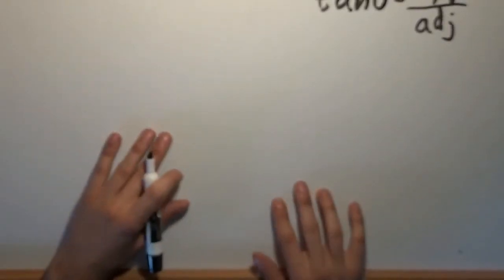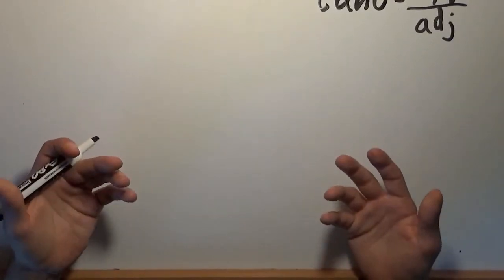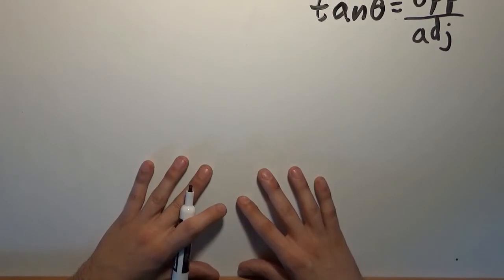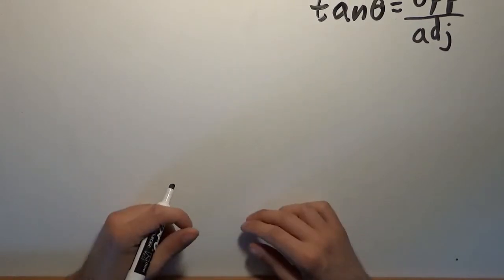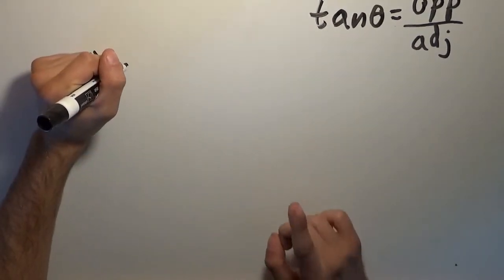So we have sine, cosine, and tangent, and they are written in terms of fractions of sides, right? Why don't we define functions that are the reciprocals of those functions? So I'm going to start with the reciprocal of the sine function.